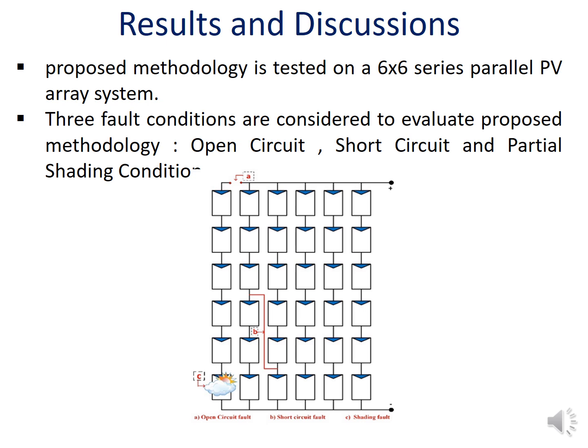To analyze the proposed methodology, a 6x6 series-parallel PV array was used, as shown in the diagram, with PV modules connected in series and parallel. Three fault conditions are applied: open circuit fault (A), short circuit fault (B), and partial shading condition (C), as clearly visible in the diagram.